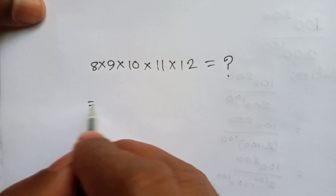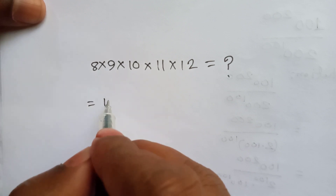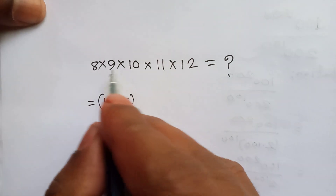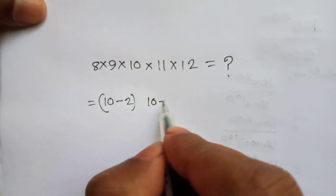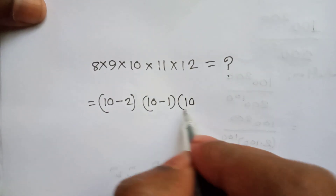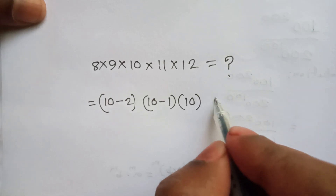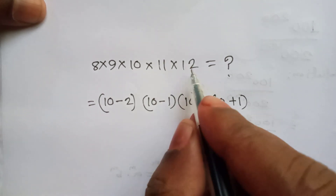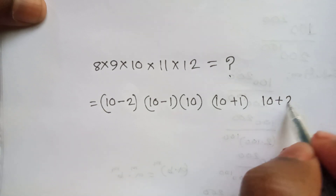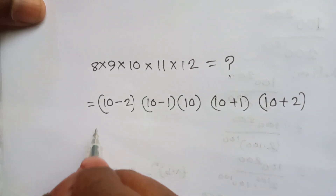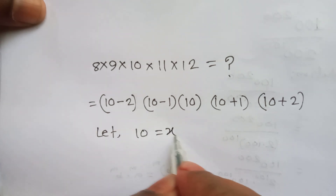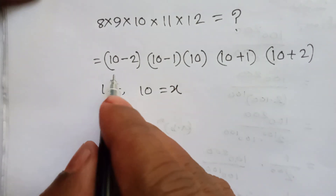Firstly, we can write 8 as 10 minus 2, times 9 which is 10 minus 1, times 10, and 11 is 10 plus 1, times 12 which is 10 plus 2.